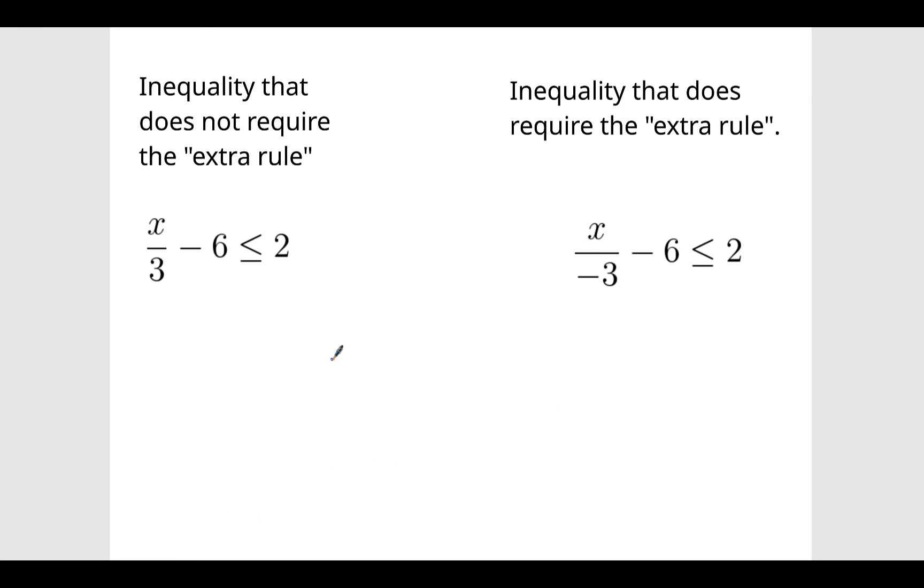Let's do another one. So here we have x divided by 3 minus 6 is less than or equal to 2. And on the right, we have x divided by a negative 3 minus 6 is less than or equal to 2. So let's go ahead and add 6 over here. And these will cancel out or become 0. 2 plus 6 is 8.